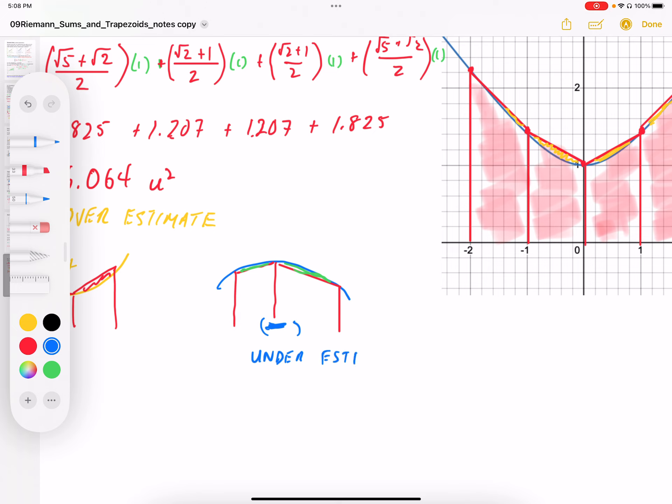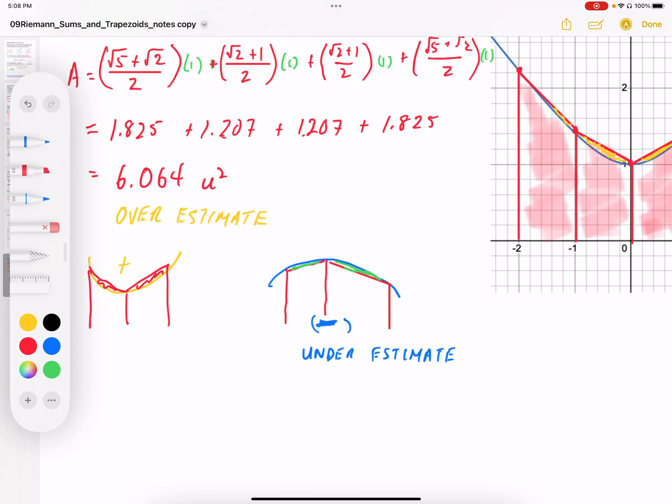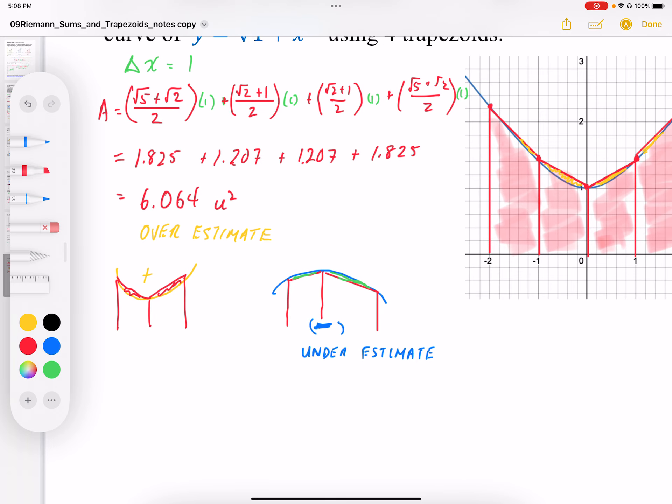And it's easy enough to determine this both for Riemann sums and for trapezoids if we just draw the picture. If we just sketch a quick diagram, we can tell whether it's overestimate or underestimate.